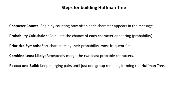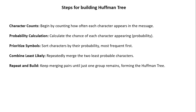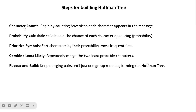The steps for building the Huffman tree: first, character count — count how often each character appears. Second, probability calculation — calculate the probability of each character appearing. Third, priority/sort symbols — arrange in descending order of probability. Fourth, combine least likely — repeatedly merge the two least probable characters. Keep merging pairs until just one group remains, forming the Huffman tree.